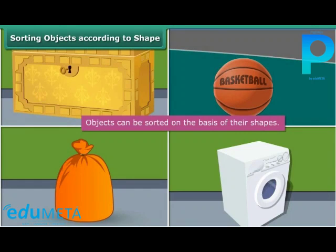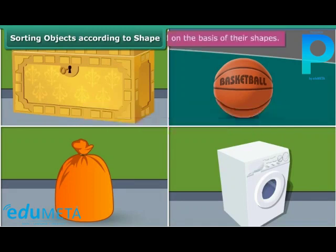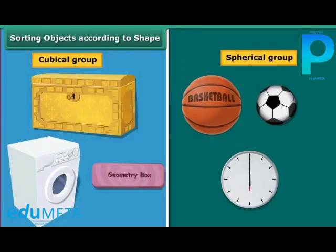Thus we can say that we can classify objects on the basis of their shapes as well. Circular or spherical objects form one group, while cubical, cuboidal, square, and rectangular objects form another group. Such a classification allows us to study and analyze the properties of different shapes.